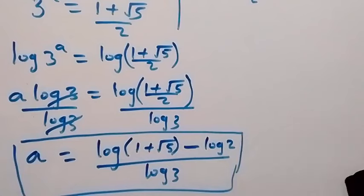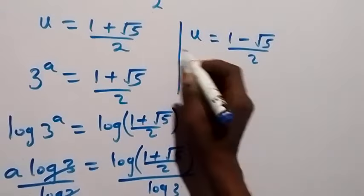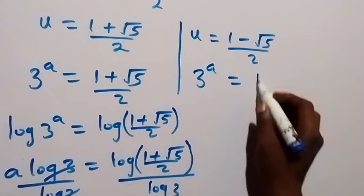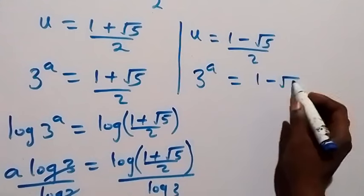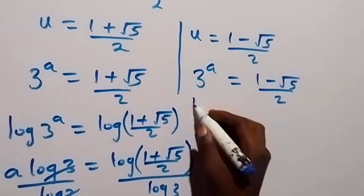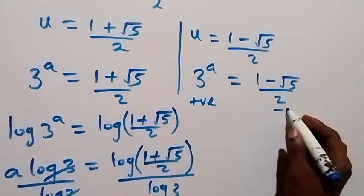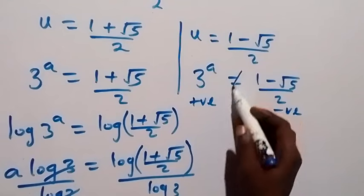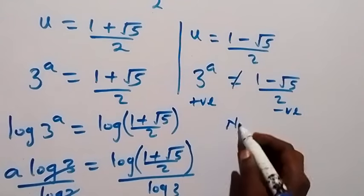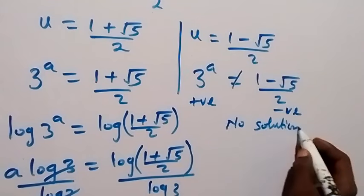Now looking at the second value of u: 3 raised to power a equals 1 minus root 5 over 2. Since root 5 is greater than 1, this gives a negative number, and 3 raised to power a cannot equal a negative number. So there is no solution on this side.